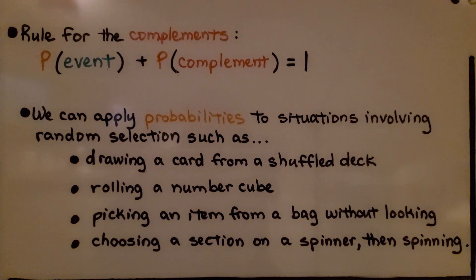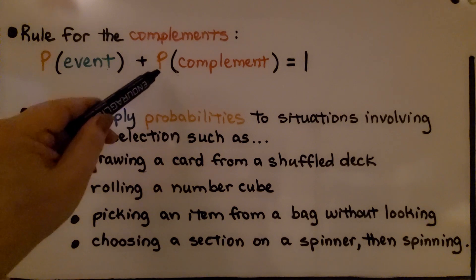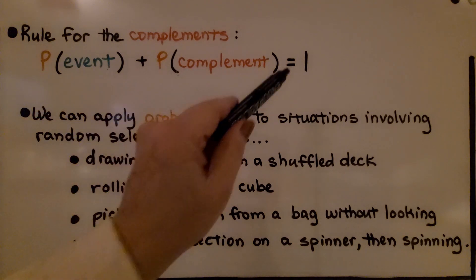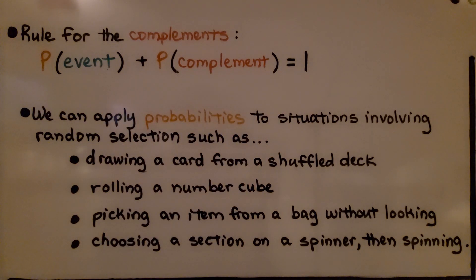The rule for complements is the probability of the event, plus the probability of the complement of the event, is equal to one. We can apply probabilities to situations involving random selection, such as drawing a card from a shuffled deck, rolling a number cube, picking an item from a bag without looking, or choosing a section on a spinner, then spinning.